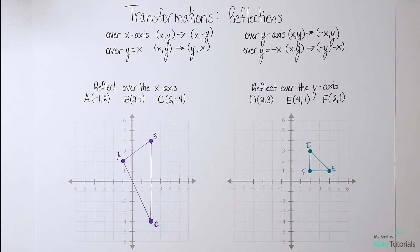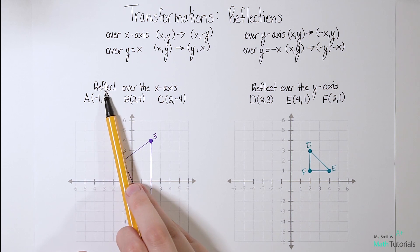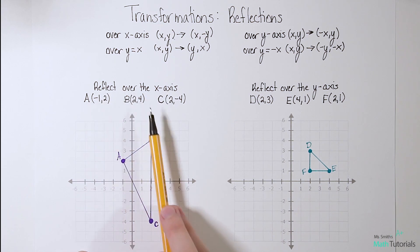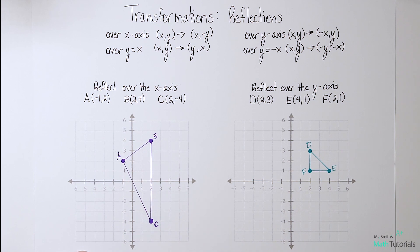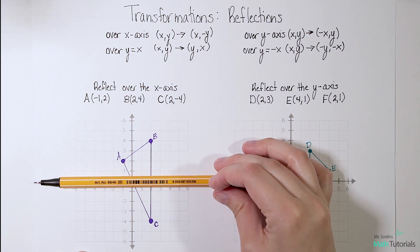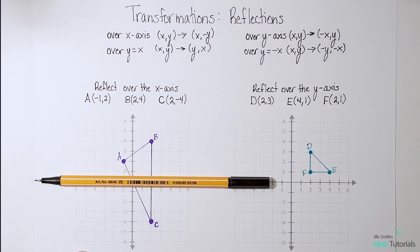We'll see each of these in action — I promise they'll make more sense once we start practicing. So let's try the first one: reflection over the x-axis. It wants us to take this shape, triangle ABC, and reflect it over the x-axis. Now the x-axis is right here where my pen is.